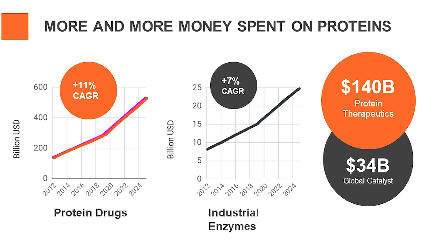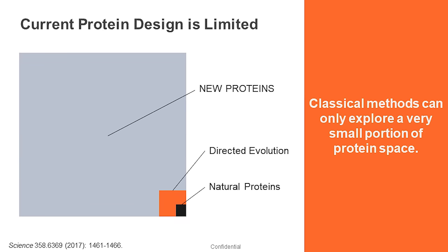There is more pressure than ever to develop better proteins. Now the challenge is that the space of proteins is astronomical. If you look at this illustration here, the black dot in the bottom right corner represents all proteins that nature has managed to explore over 4 billion years of life. It is really a very small proportion of the possibilities when it comes to proteins. So how do we explore this space that even nature hasn't had a chance to explore?